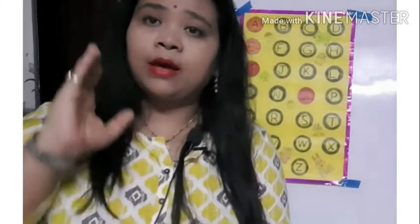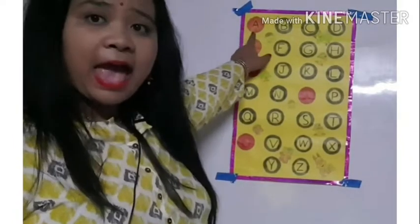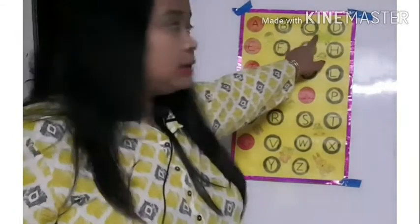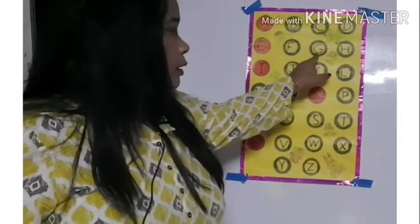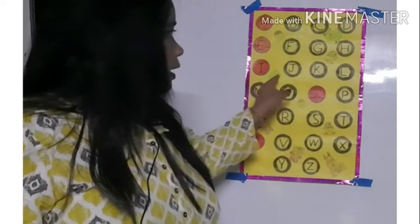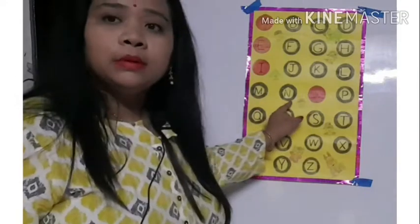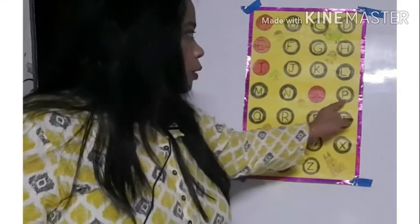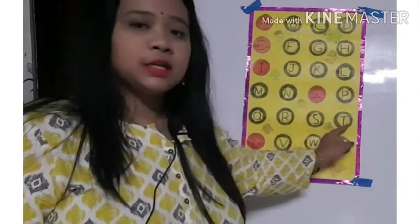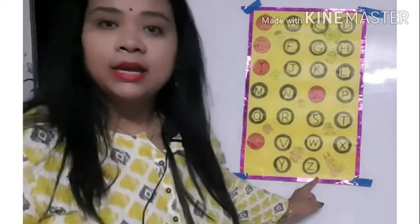Theek hai, toh hum ek baar phir sounds ke saath bolte hain — aapko mere baad repeat karna hai: A, B, K, D, F, G, H, I, J, K, L, M, N, O, P, K, R, S, T, A, V, W, S, Y, and Z.